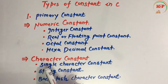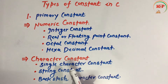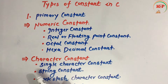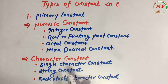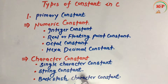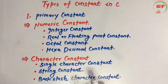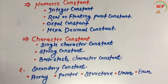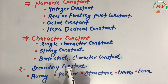Character constant is further divided into 3 types: single character constant (enclosed in single inverted commas), string constant, and backslash character constant.